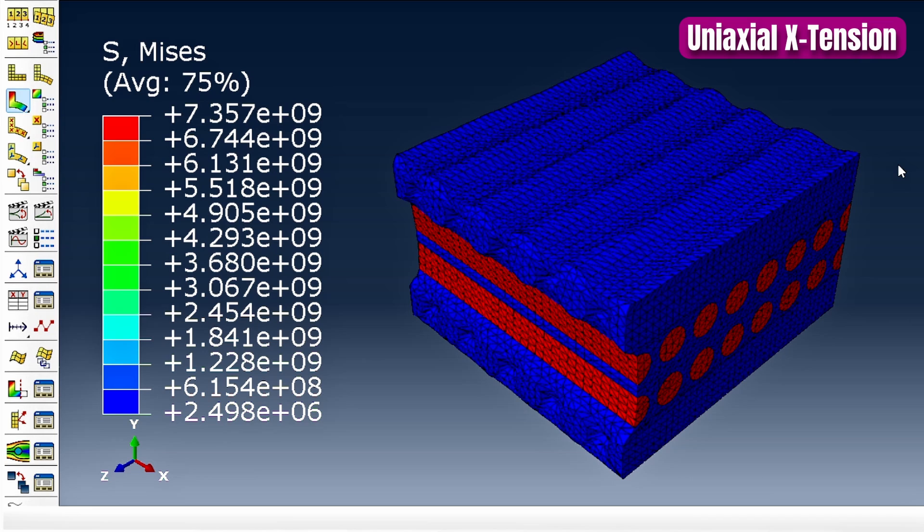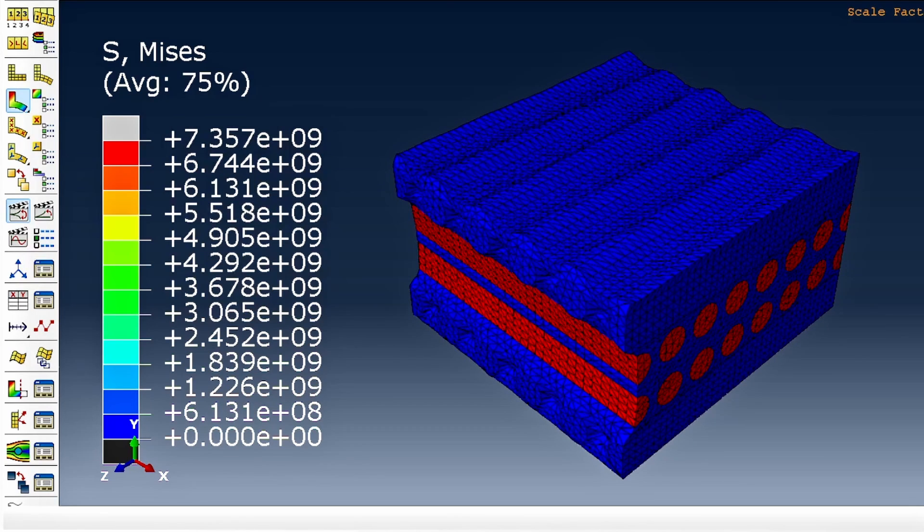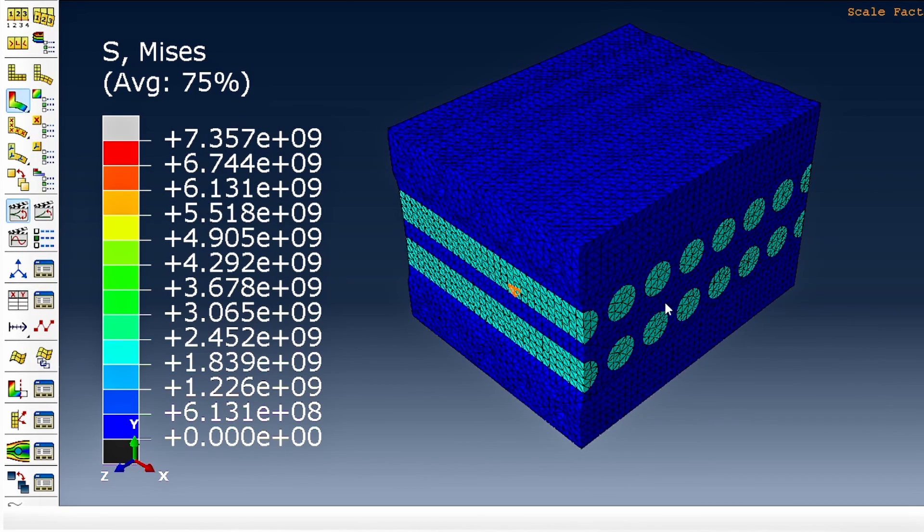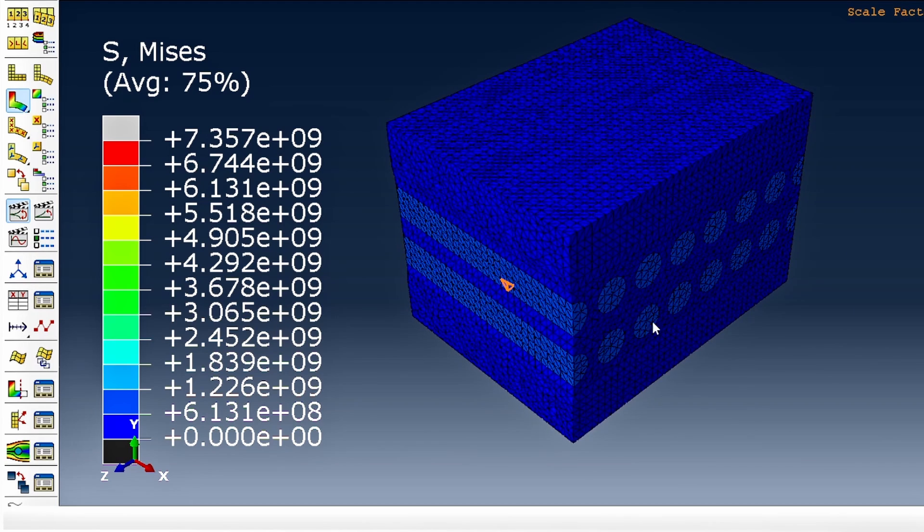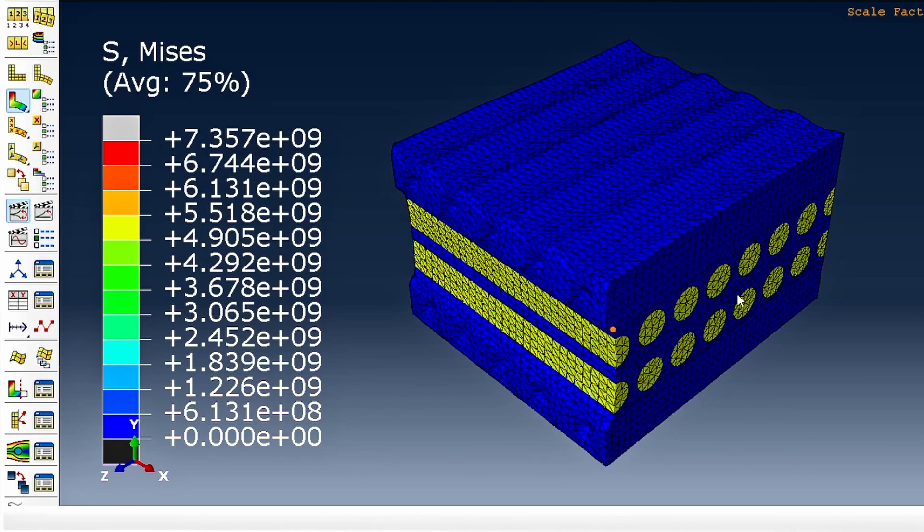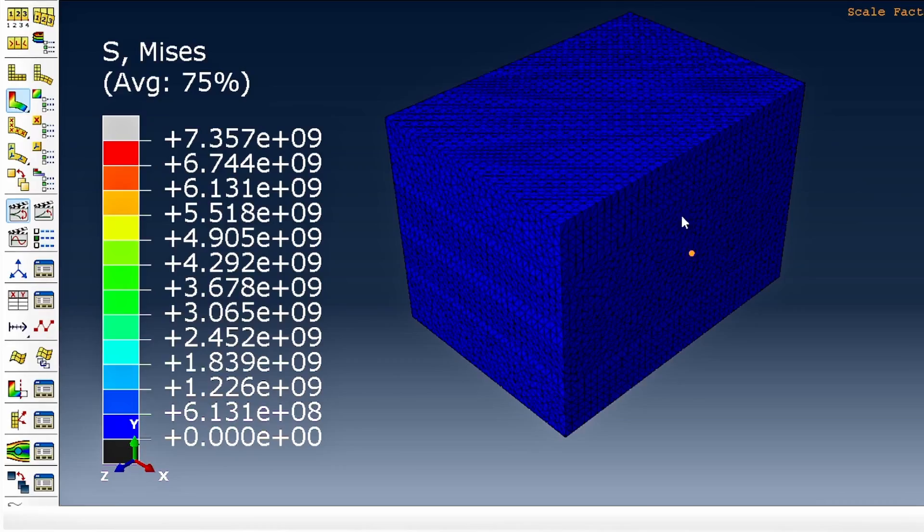So let's look at the result. The first one we're looking at here is the uniaxial X deformation, and what we see here is the von Mises stress. So essentially the fibers here that are in the main loading direction, which is the 90-degree fibers, are taking most of the loading compared to the other ones.